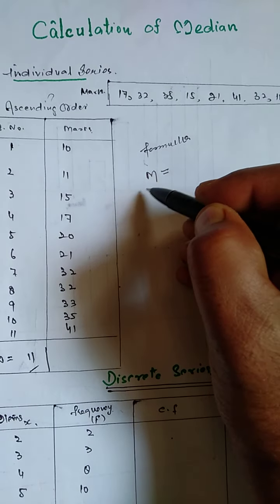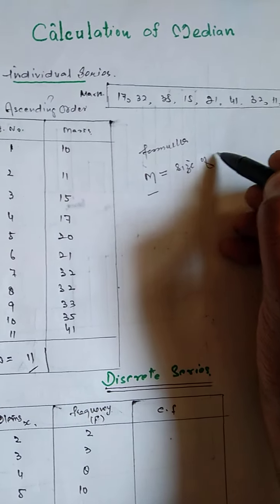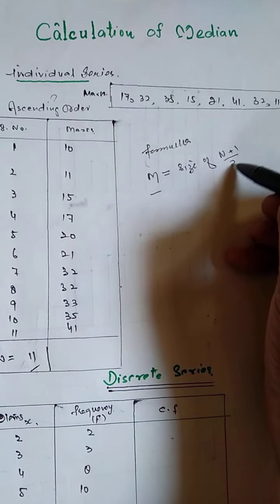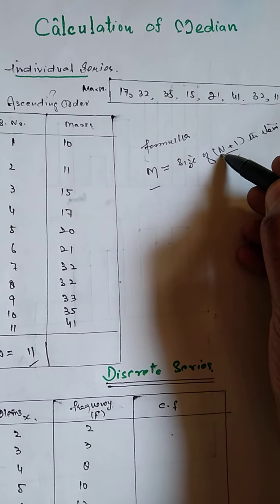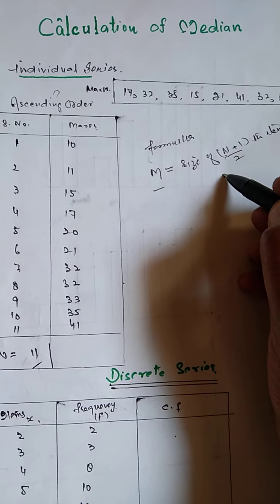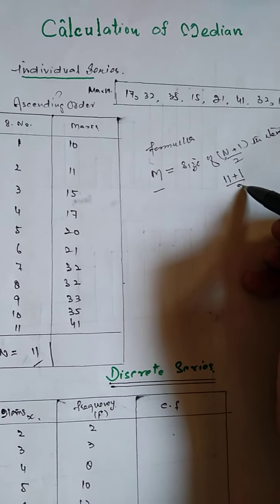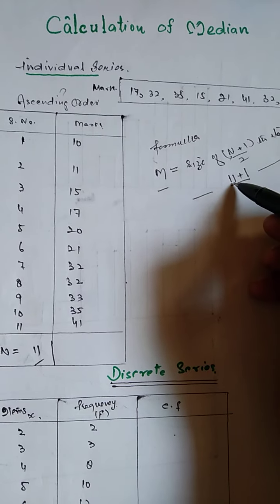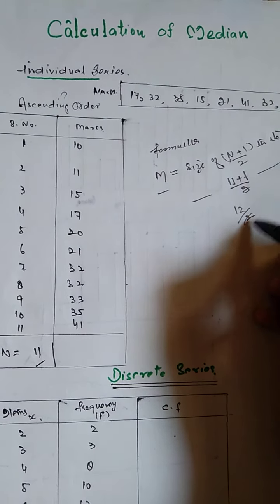For this series we have to apply the formula: M is equal to size of n plus 1 upon 2. M, you know, median is represented by M. M is equal to size of n plus 1 upon 2. N is the number of items which is 11 here. N is from formula and you have to divide it by 2.